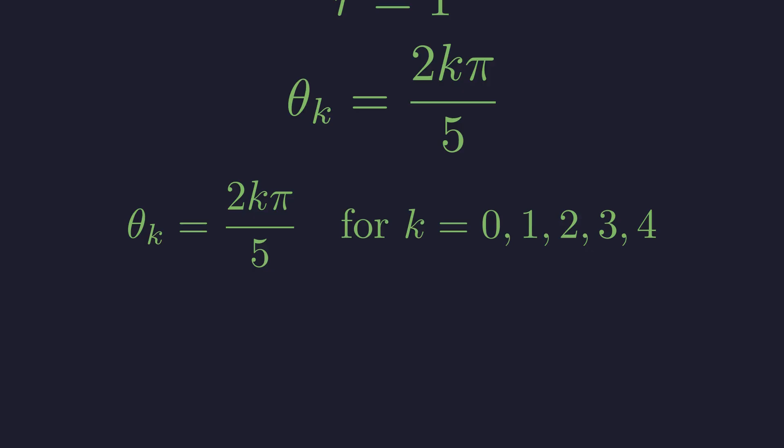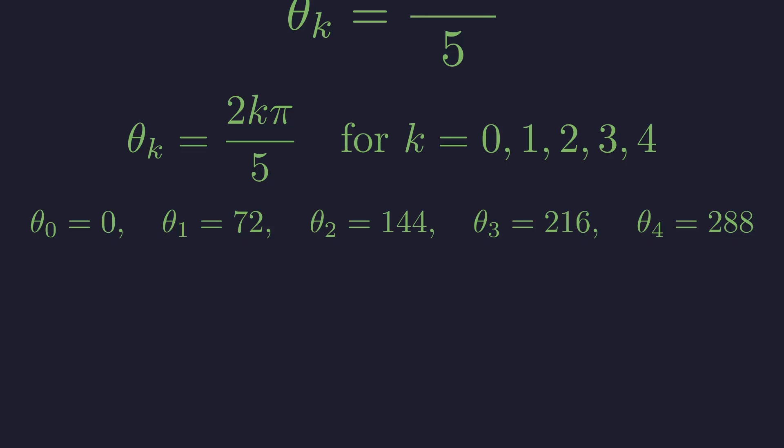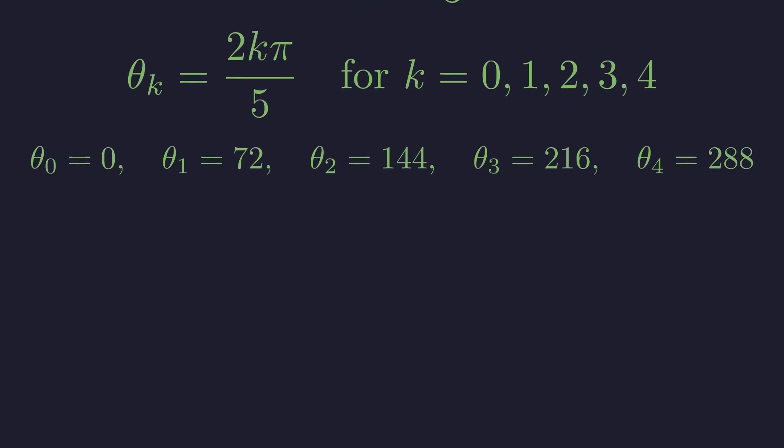For k equals 0, 1, 2, 3, and 4, we get five distinct angles. Converting to degrees, we see the roots are evenly spaced every 72 degrees around the unit circle. These two conditions combine to give us our single, elegant formula for the five roots.